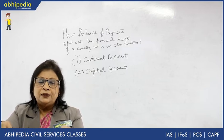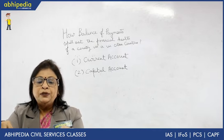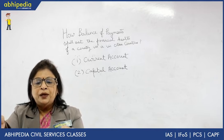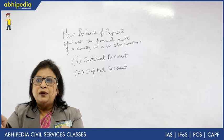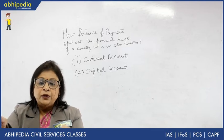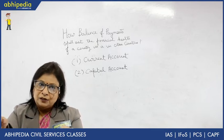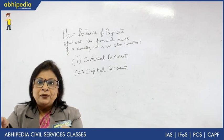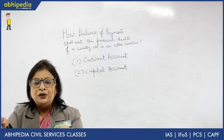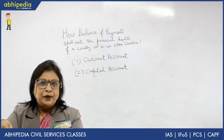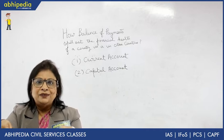Now I will tell you the causes that lead to disequilibrium. First, natural causes — natural calamities like famine, drought, earthquake, or tsunami. In those cases, naturally we have to import more than we export, and our payments become more than our receipts, causing disequilibrium in our balance of payment.